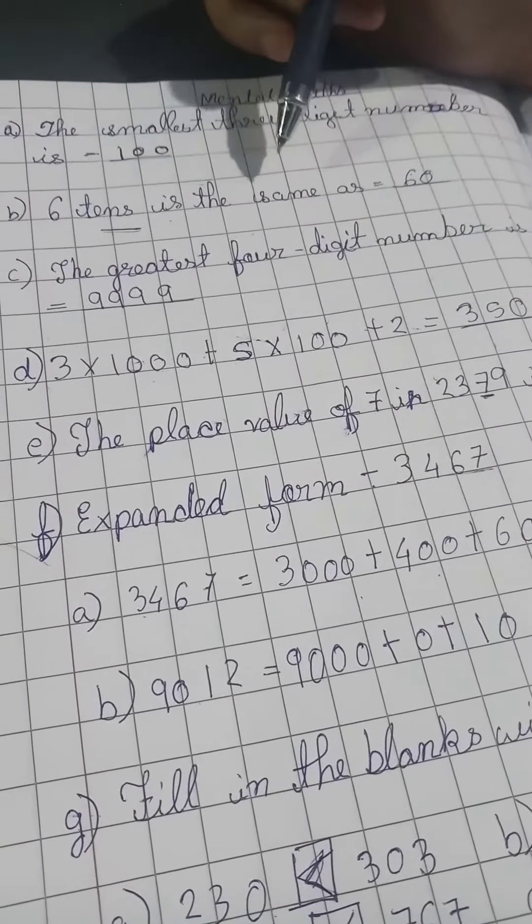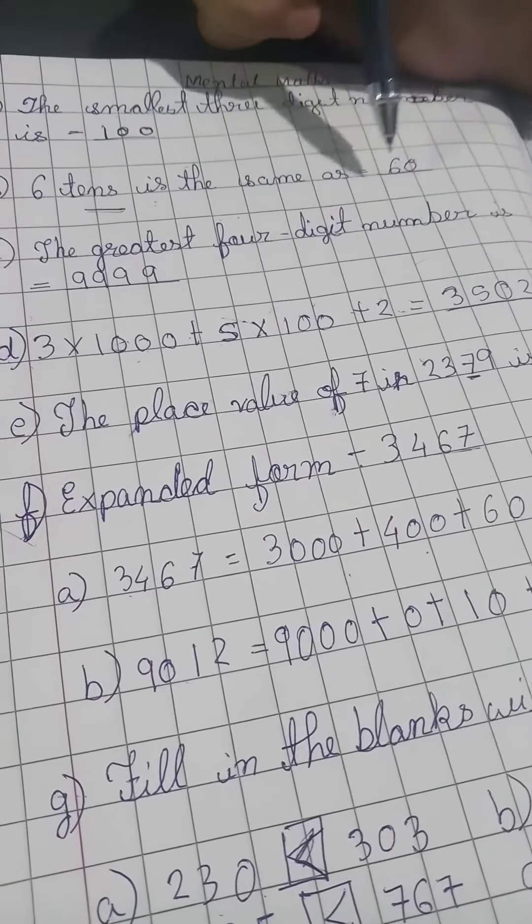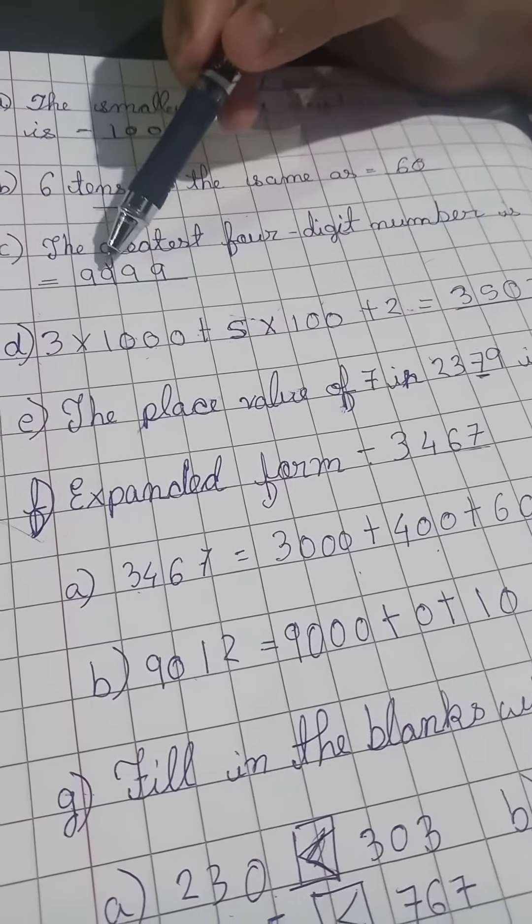Six tens is the same as 60. The greatest 4-digit number is 9999.